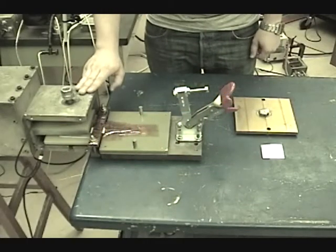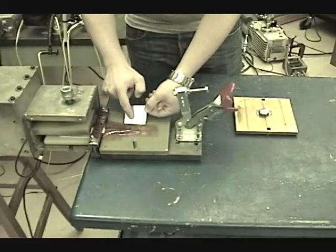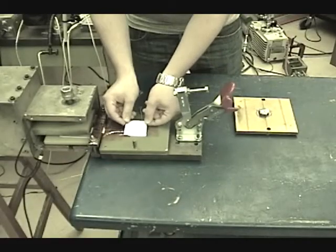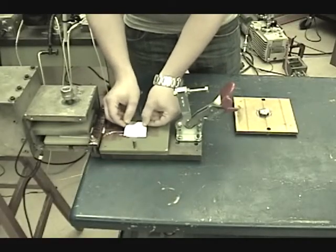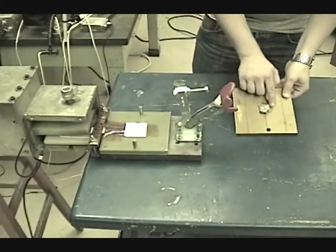The discharge current from the capacitor bank runs through the coil. This creates eddy currents in the blank, which causes a repulsion between the blank and the coil. This accelerates the blank into the shearing edge of the die.